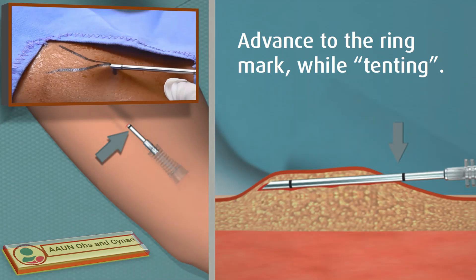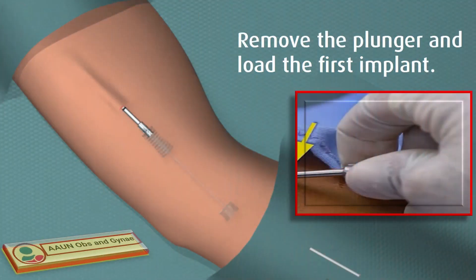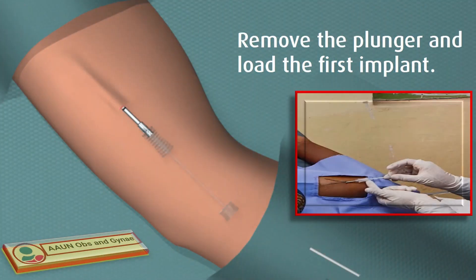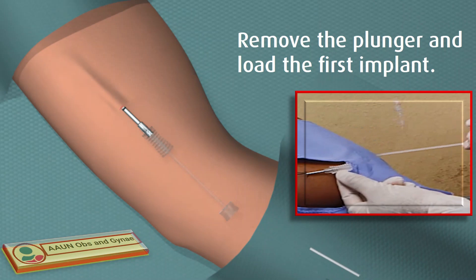Advance the trocar beneath the skin about 5.5 centimeters from the incision to the mark closest to the handle of the trocar. Do not force the trocar — if you feel any resistance, try another direction. Next, remove the plunger when the trocar is advanced to the correct mark.